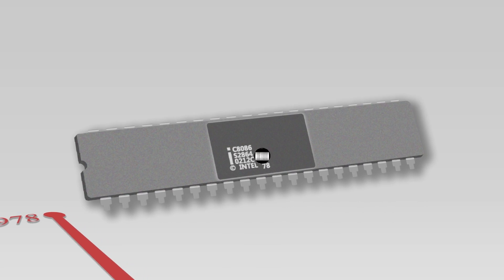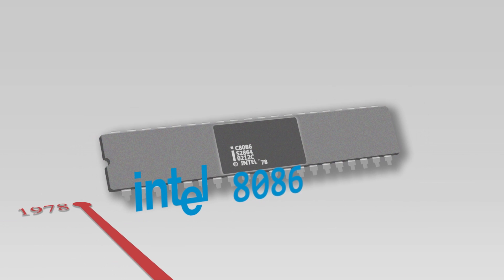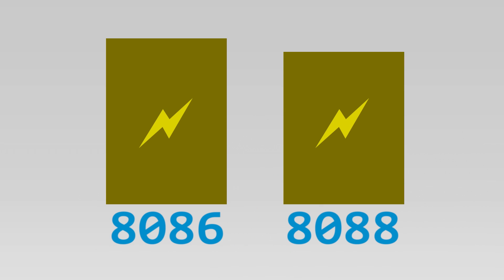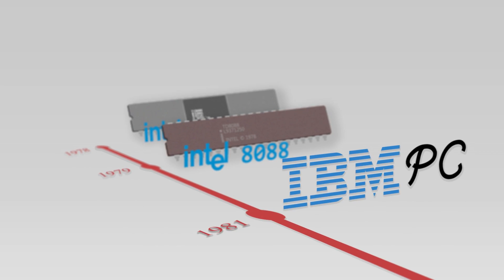Instead, it was designed to accept commands from programs for what's called general computing, using a specific set of predefined instructions to accomplish any task. The set of commands that the chip accepted for its general computing was named x86. A year after releasing the 8086, Intel released the 8088 chip that used the same x86 instruction set but was a little less powerful, so that it would cost less to build a full computer. In a rush to enter the personal computer market, computer manufacturer IBM released the IBM PC in 1981, using readily available parts and processors instead of its own, including the Intel 8088 as the central processing unit.